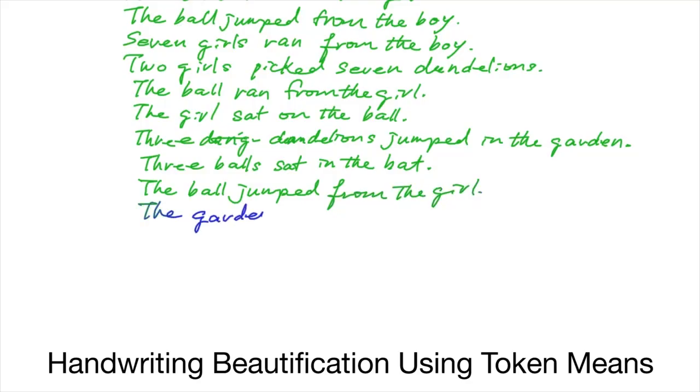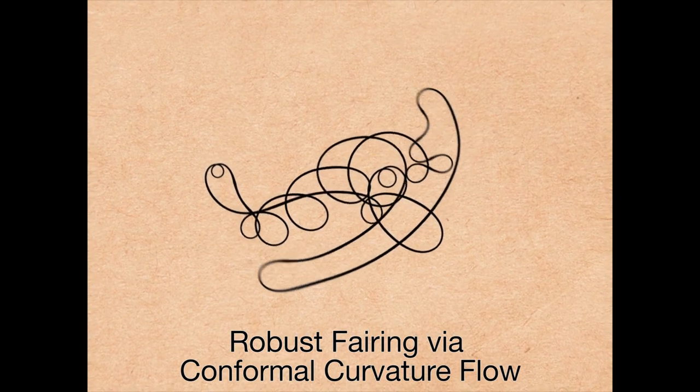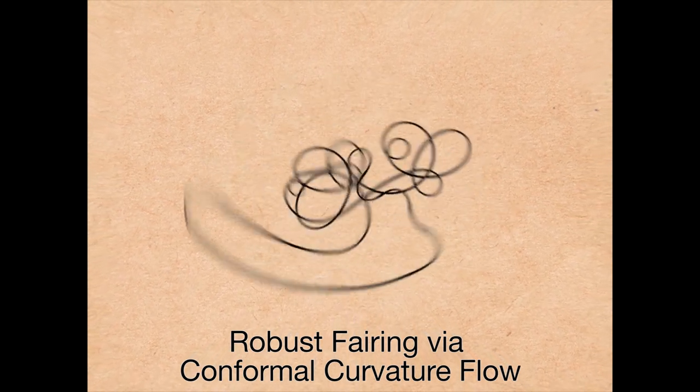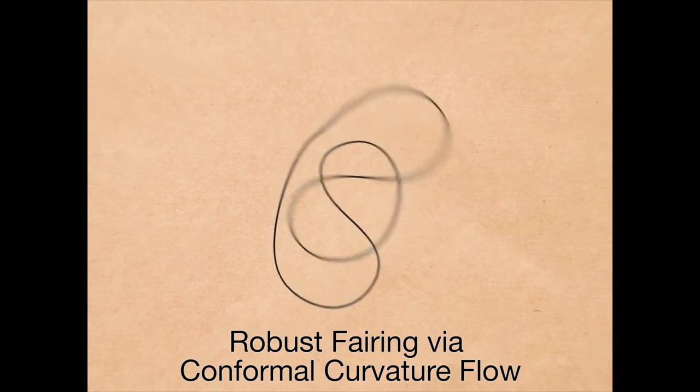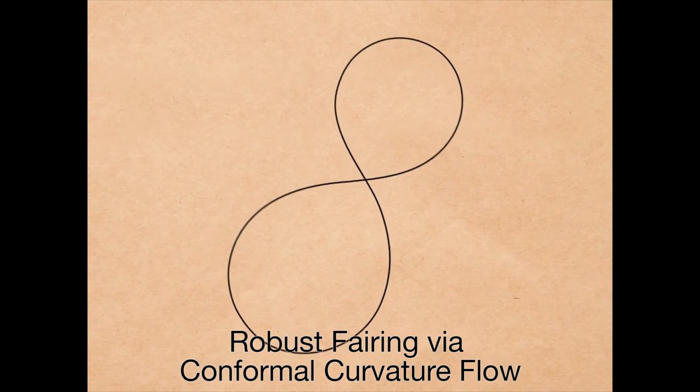A new approach to handwriting beautification adapts to your personal writing style by averaging previously written similar strokes. Length preserving flow on planar curves avoids sharp cusps while eventually unwinding to a smooth curve of equal turning number. And this algorithm generalizes to surface fairing.